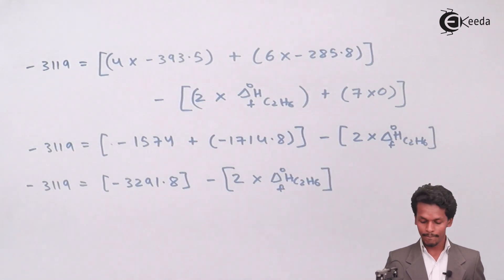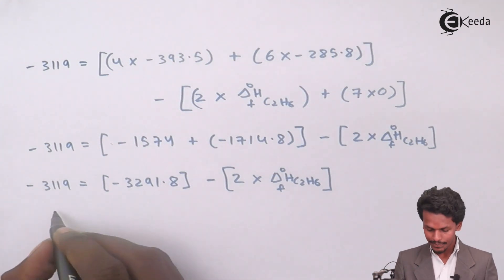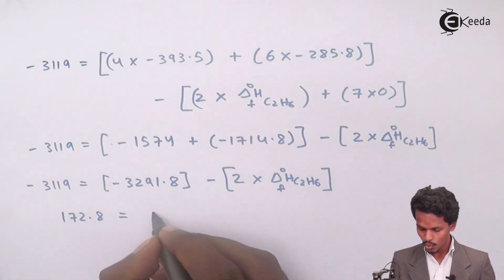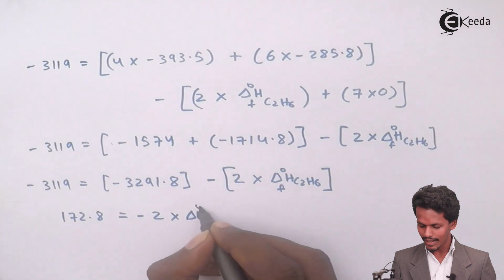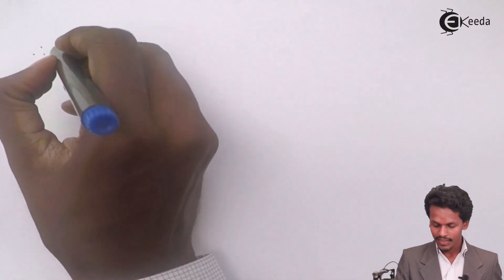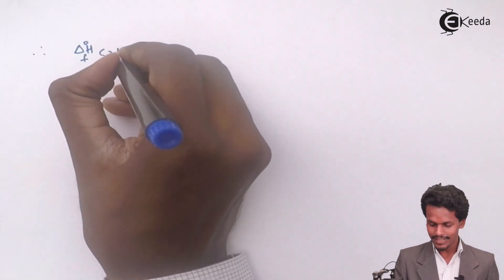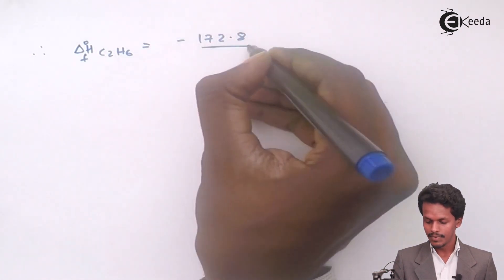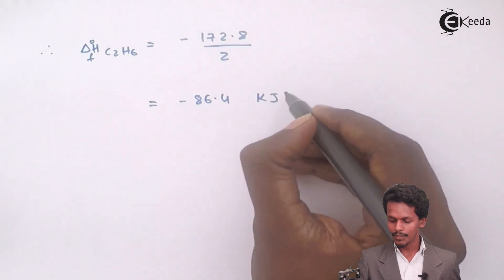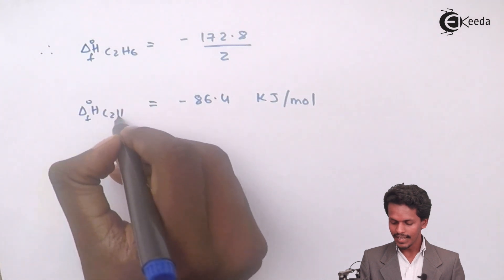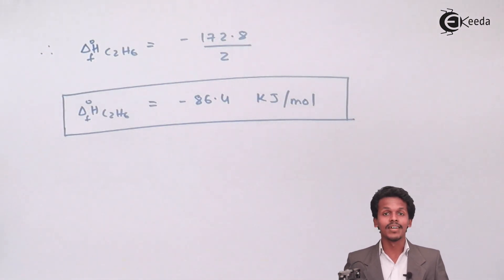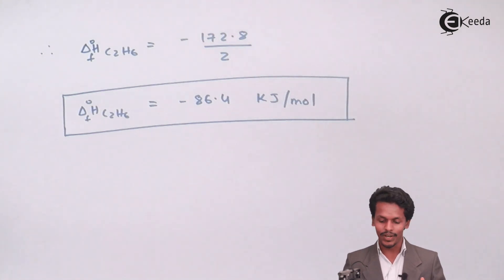Rearranging: 2 × ΔHf°(C2H6) = minus 3291.8 + 319 = minus 2972.8... let me recalculate: minus 3291.8 minus (minus 319) gives minus 2972.8, so 2 × ΔHf°(C2H6) = minus 172.8. Dividing by 2: ΔHf°(C2H6) = minus 86.4 kJ/mol. So the standard heat of formation of C2H6 is minus 86.4 kJ/mol.